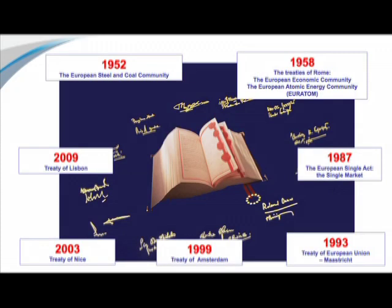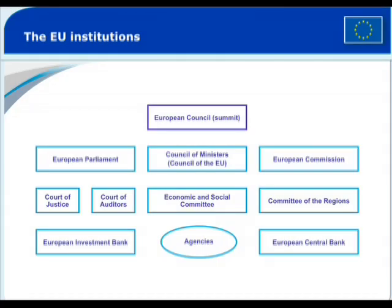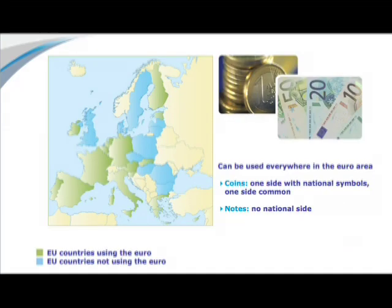Trade and investment within Europe have become much easier since the 1950s. Today, member states allow investors from other member countries to freely establish and conduct business and transfer capital. Gradual elimination of bureaucracy at Europe's national borders cut delivery times and reduced transportation costs. The EU eliminated the need to use most customs clearance documents. Sixteen EU countries have adopted the euro as their common currency.